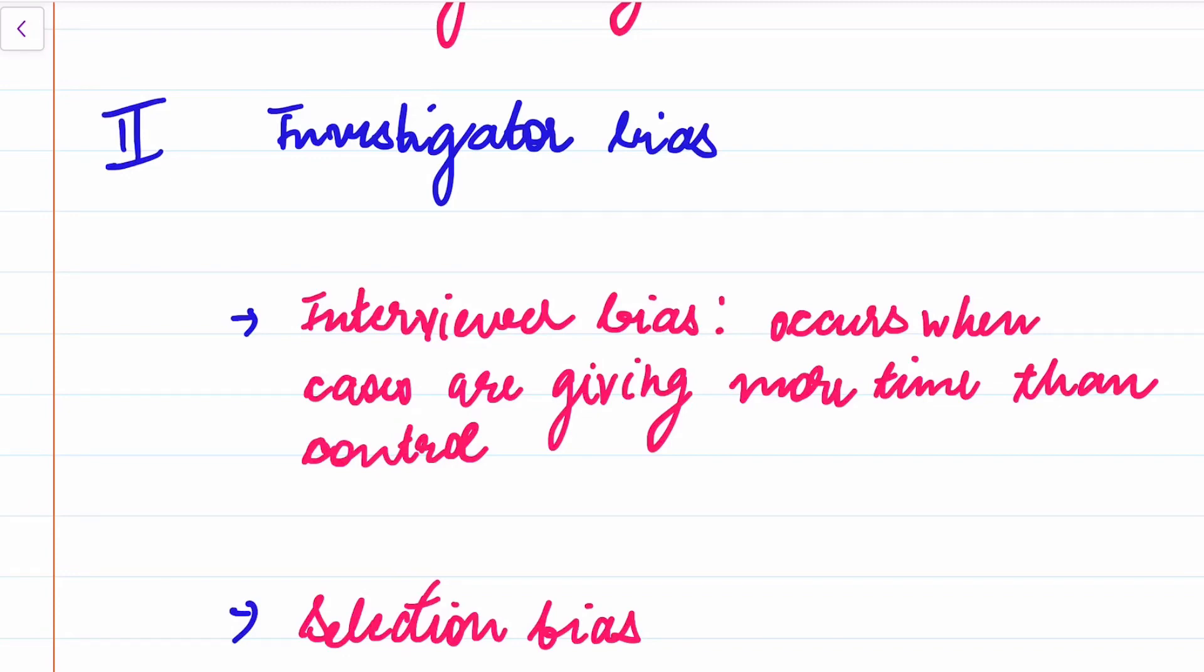Investigator bias can be of two types: interviewer bias or selection bias. What is interviewer bias? It occurs when cases are given more time than control. Suppose a person is giving interview to Marrow. What happens is the interviewer will ask only about the Marrow question bank, only about the Marrow grand test, but he will not ask what other things he did besides Marrow. So there will be an interviewer bias.